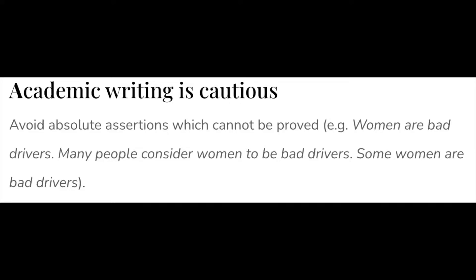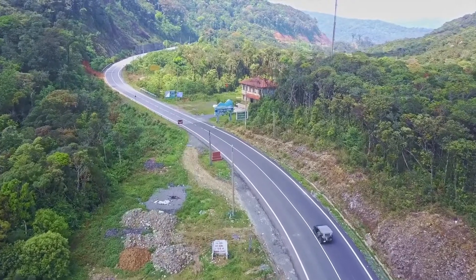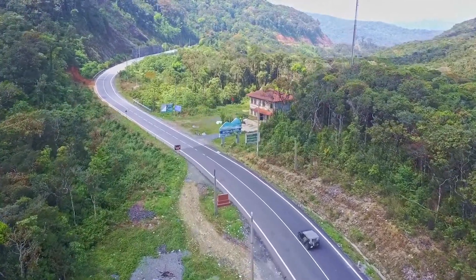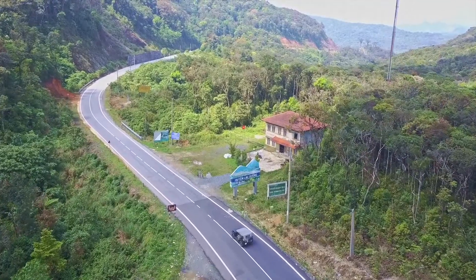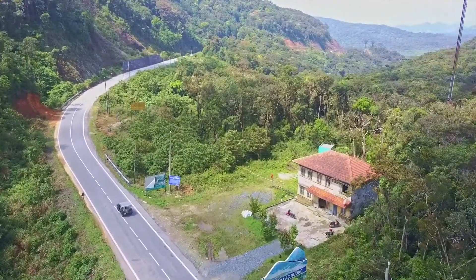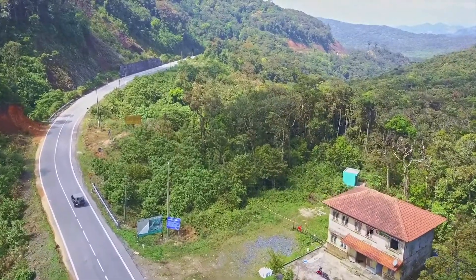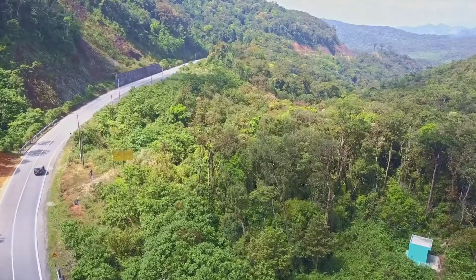Number six: academic writing is cautious. Absolutely avoid assertions which cannot be proved. So don't say something like 'women are bad drivers' — that might be your personal opinion but it cannot be proved. What you could say instead is 'many people consider women to be bad drivers' or 'some women are bad drivers'.